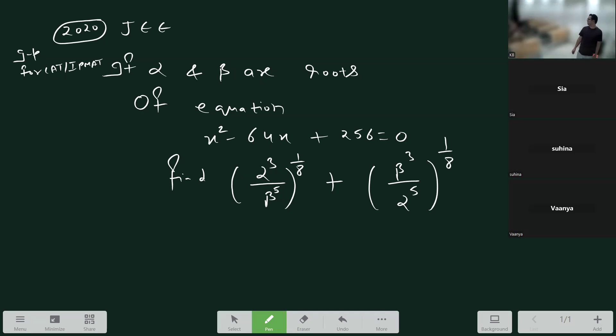If alpha and beta are roots of this equation, then alpha plus beta equals minus b, which is minus minus 64. Because from this equation, the product alpha times beta equals 256.